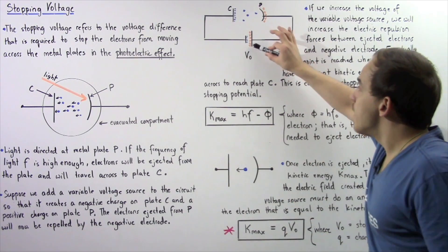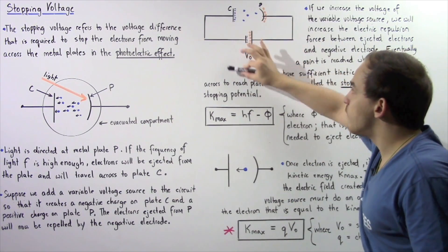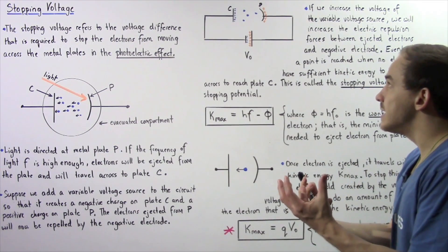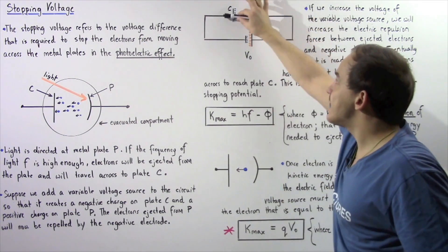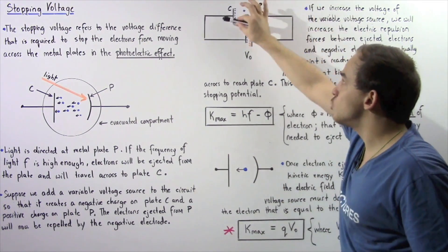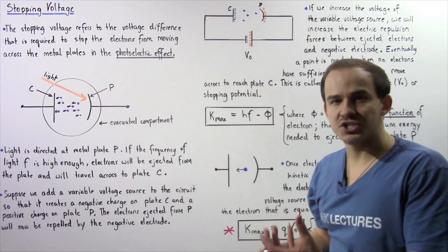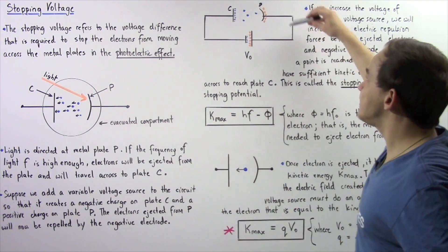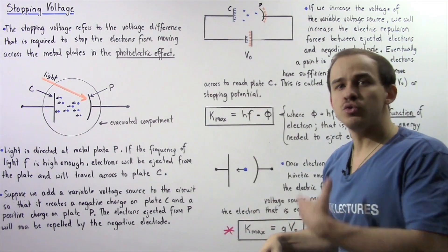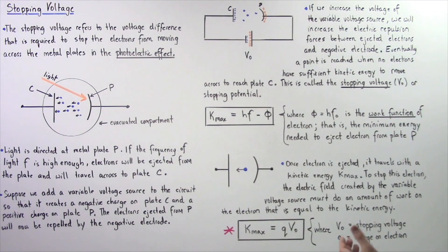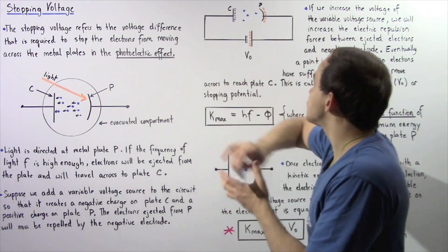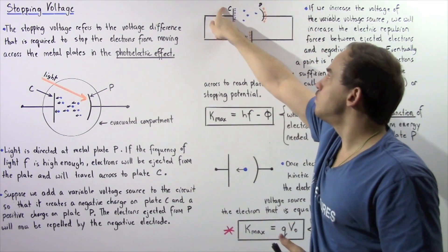So basically, what happens is, by increasing this voltage V0, we're increasing the electric field that exists between the following two plates and that increases the electric forces that are acting on the electrons to stop those electrons, to slow down those electrons. Now, eventually, a point is reached when no electrons have sufficient kinetic energy to actually move across from plate P to plate C.